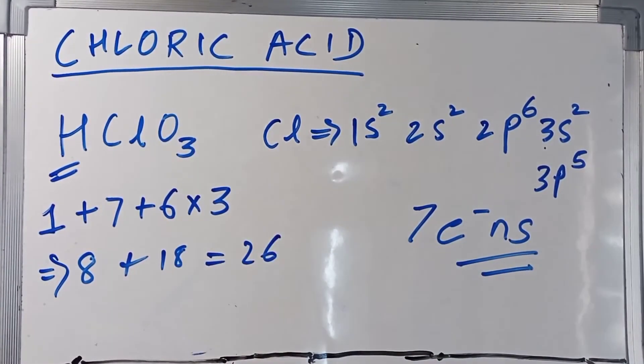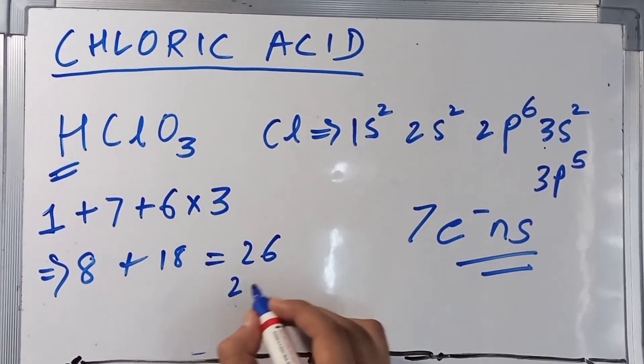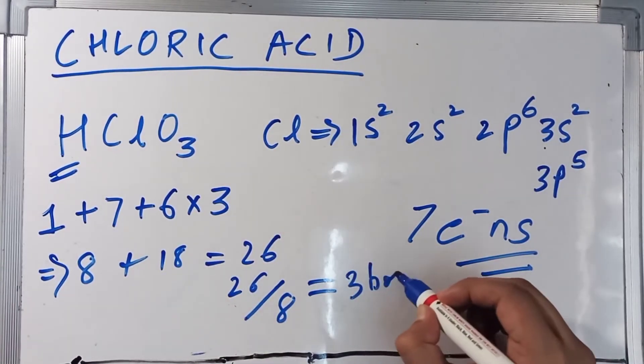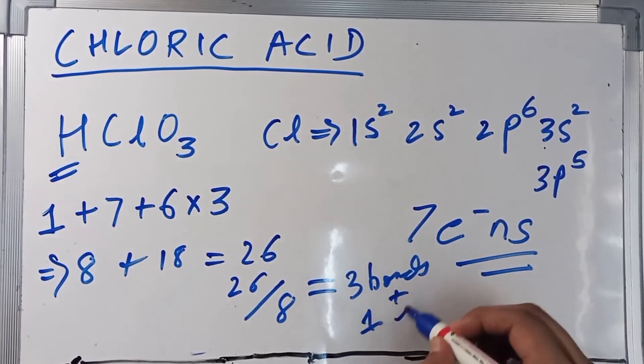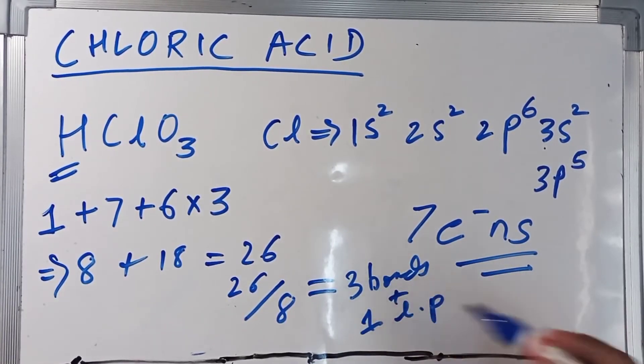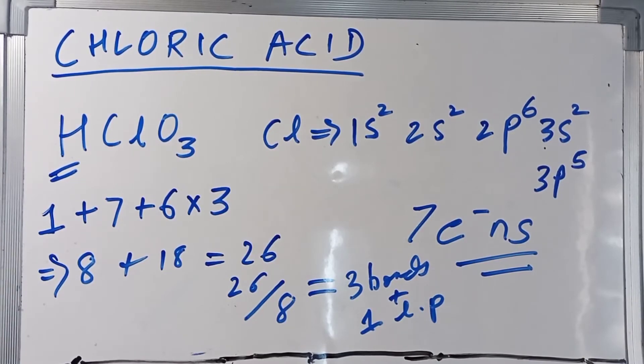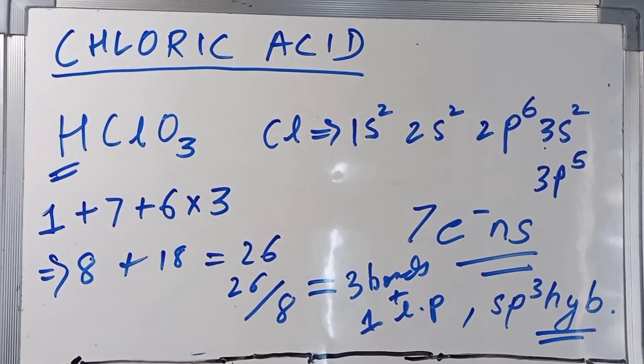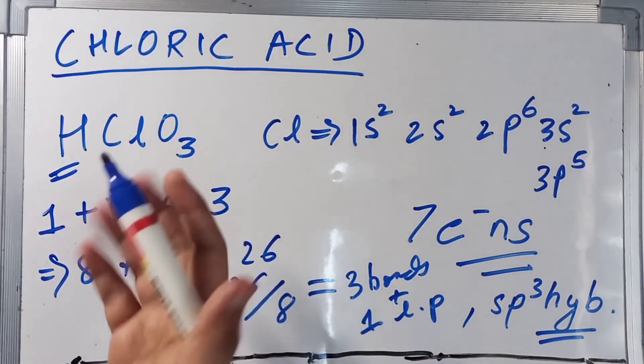26. Right. Now, we are going to divide this 26 by 8. We get 3 bonds plus 1 lone pair. And this is 3 plus 1 is 4 which corresponds to SP3 hybridization. So, we have got its actual geometry which is tetragonal. Tetragonal geometry will be corresponding to chloric acid.